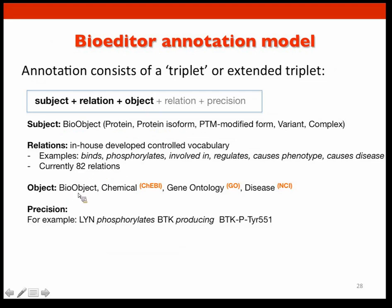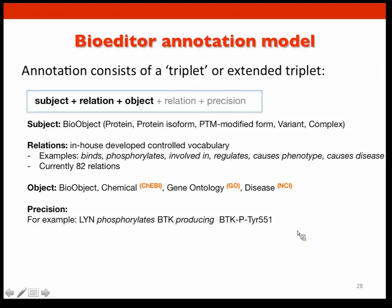The object can also be a bio-object — for example, 'my protein binds another protein' or 'my protein binds calcium.' It can be a gene ontology term: 'my protein is involved in Wnt signaling.' Or a disease: 'a variant of that protein is found in a certain disease.' We also use extended triplets when the simple triplet format is too restrictive. For example: 'LYN phosphorylates BTK' producing the specific phosphorylated protein with the exact modification.